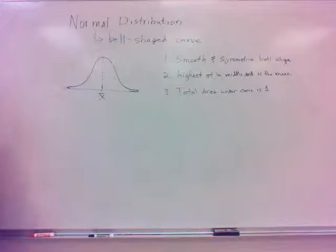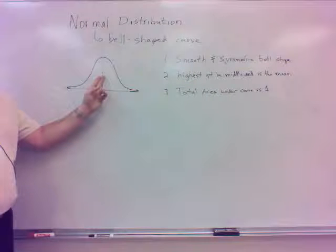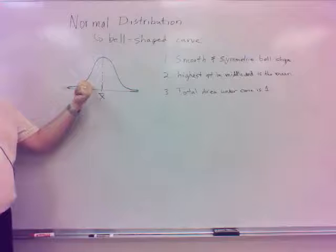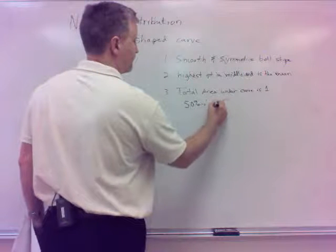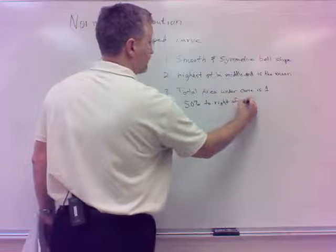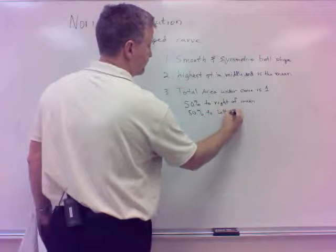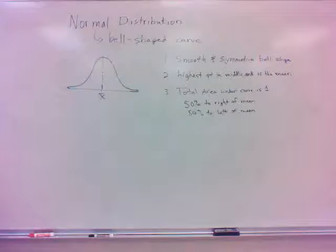The total area under the curve is 1. And what we might do is break that up into the down the middle there. So what percentage would we have over here to the right of the mean? 50% on the right of the mean, 50% or less. Yeah.